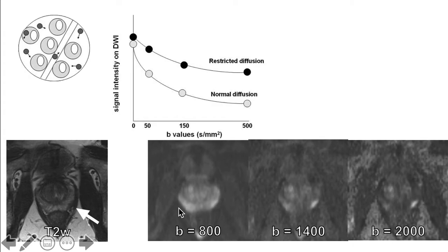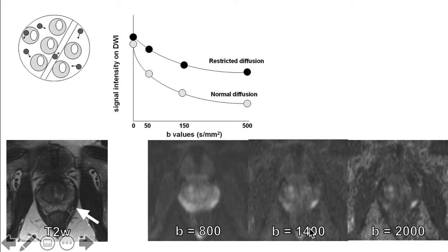Note here that we have a suspicious hypo-intensation in the peripheral zone on the left. But if we use a B value of 800, we are not sure if this is indeed an area of restricted diffusion or not. But if we use an increased B value, the area which initially had a T2 shine-through is now relatively less in signal, making our lesion stand out even more so with a higher B value or B value of 2,000.